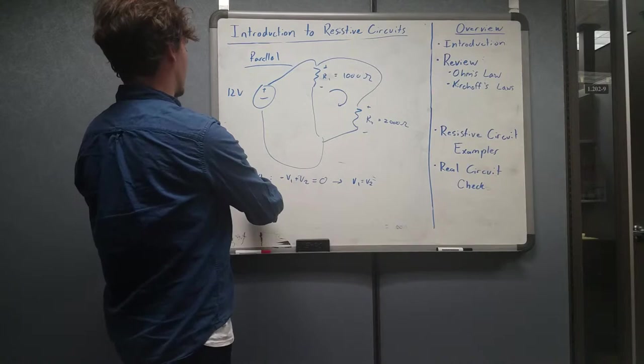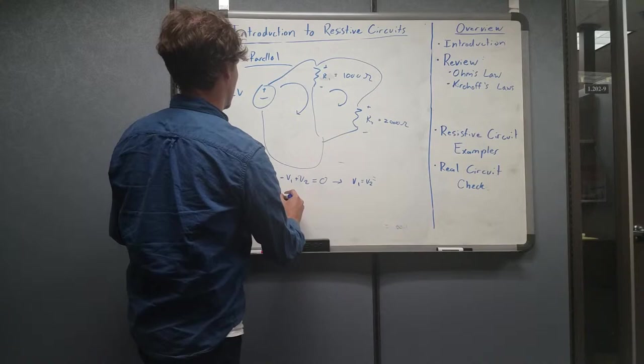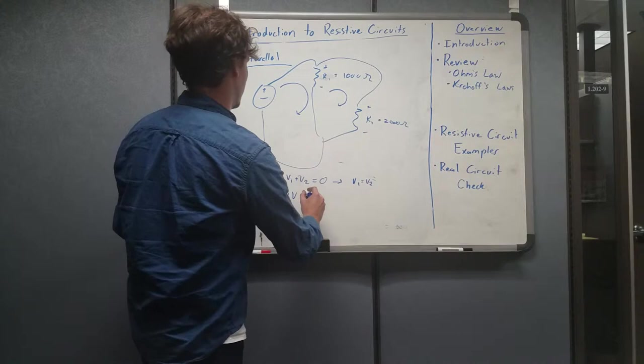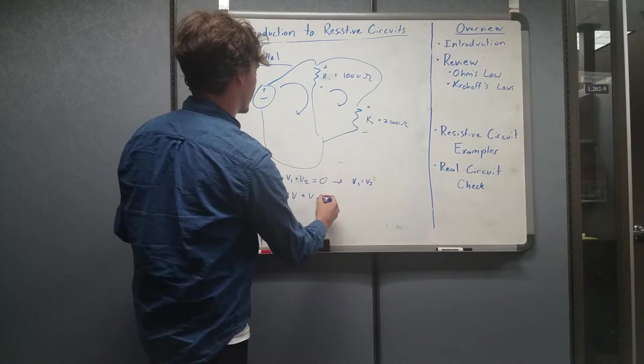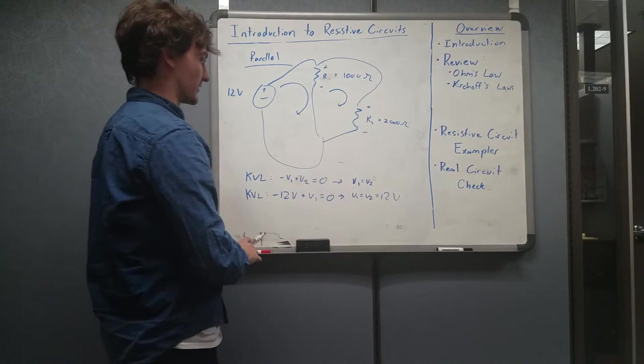And then in another KVL, we see that these elements are also together. So we'll look at our source as well as our first resistor. So we actually have minus 12 volts plus, notice how the sign flipped on the V1 this time because of the way that we're going around the circuit equals zero. And therefore, as we would expect, V1 equals V2 equals 12 volts. So as you can see, based on the way I've mapped, all of these are in fact indeed in parallel.